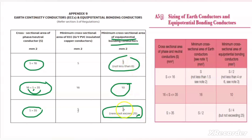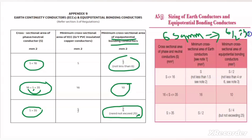Let us take an example. Suppose I have a phase conductor size of 6 mm². Then the equipotential bonding conductor will be S divided by 2 — that is 6 divided by 2 — which gives 3 mm². But the rule says not less than 6 mm², so even though the calculated value is 3 mm², we must select 6 mm². The only difference between DIVA and ADDC regulation is that in ADDC, the minimum is 4 mm². So if designing for a DIVA project, select 6 mm²; but for an Abu Dhabi project under ADDC, the minimum equipotential bonding conductor would be 4 mm².